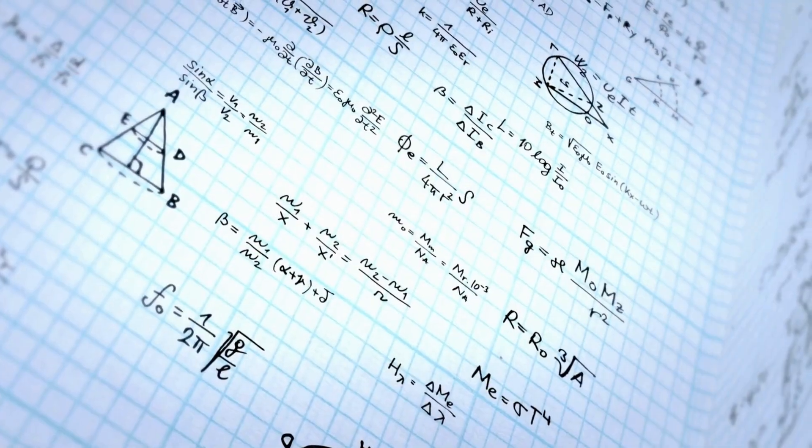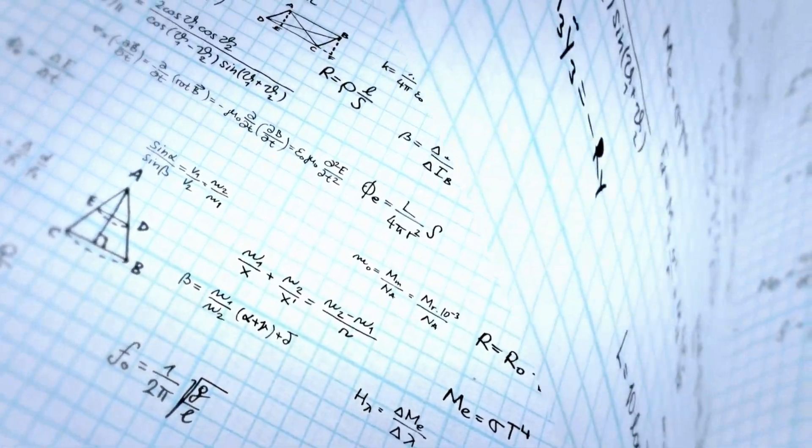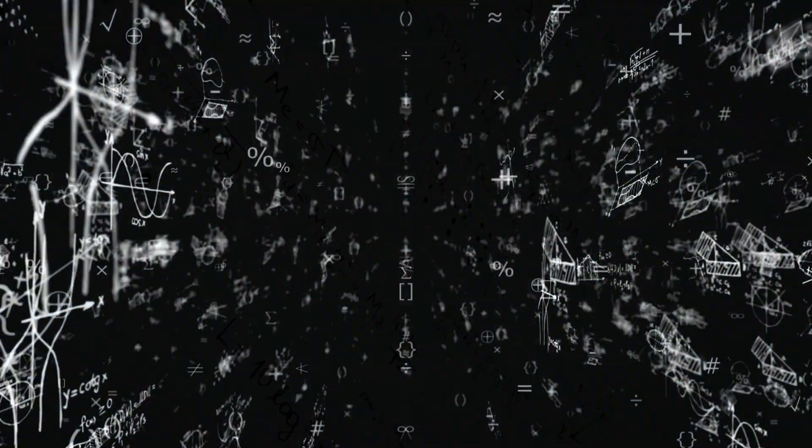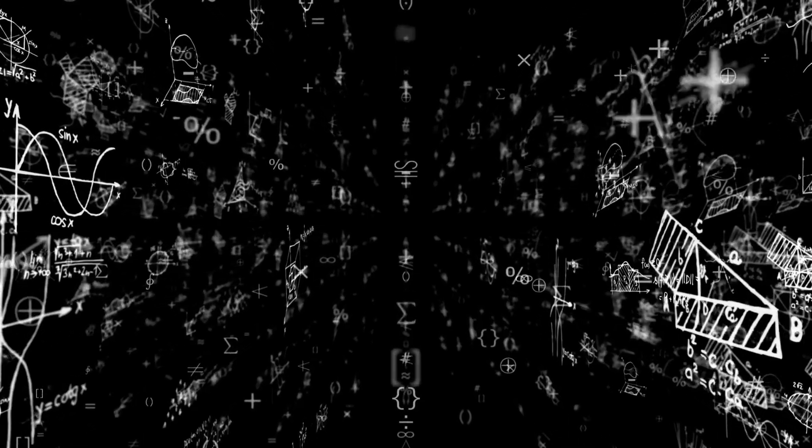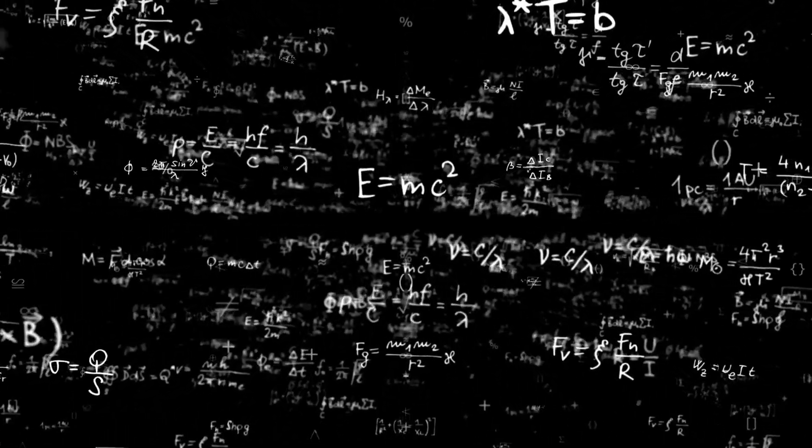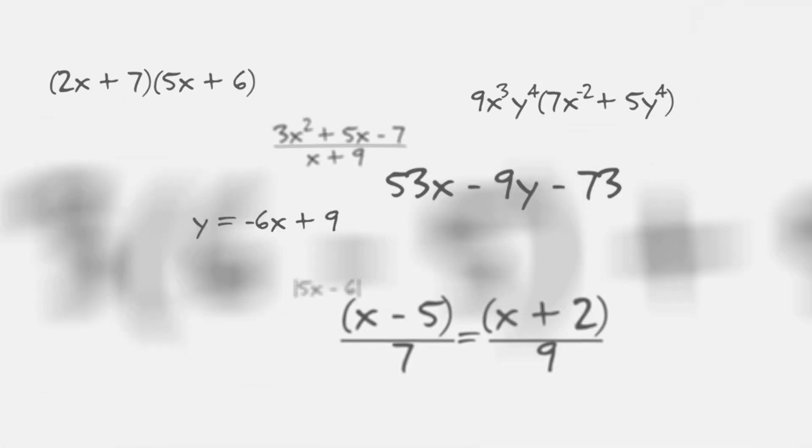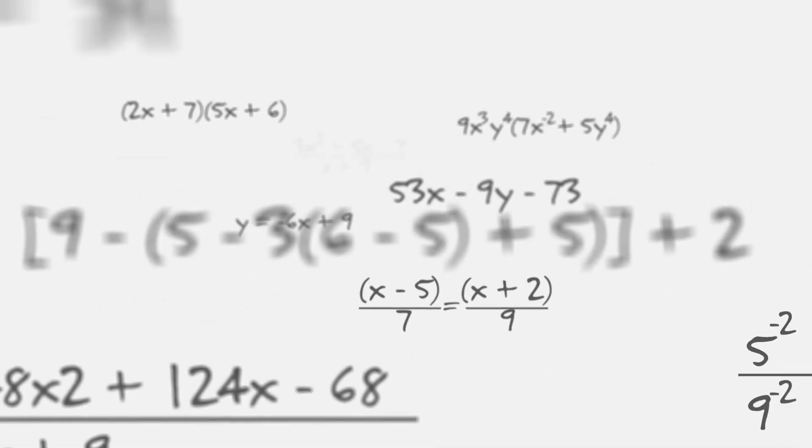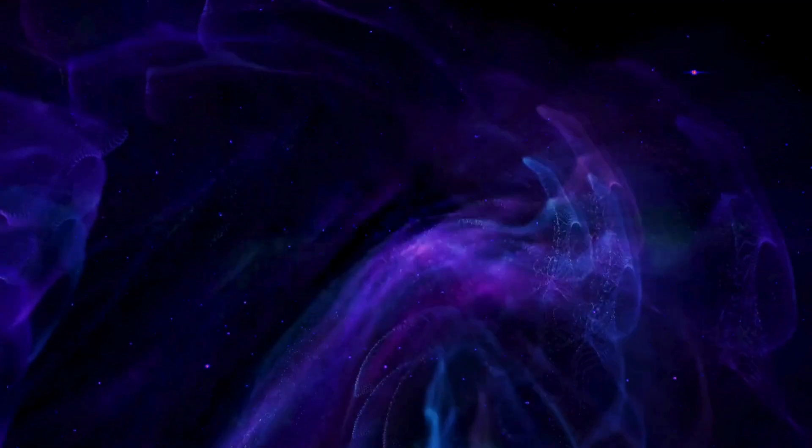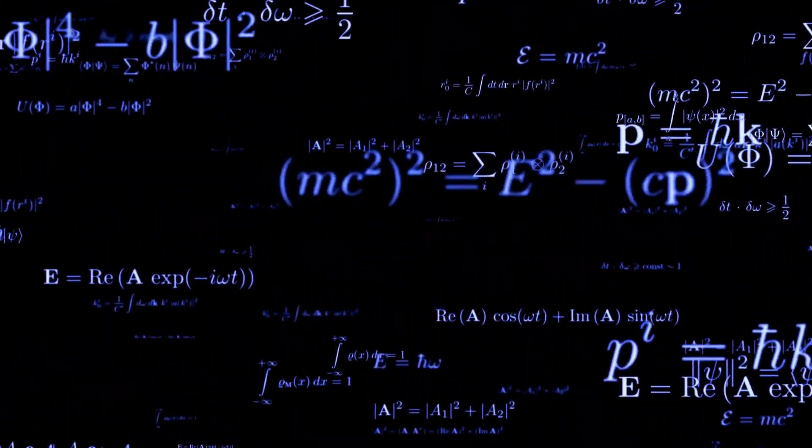So far with string theory, two plus two always is four. Perhaps it is the only theory where two plus two is four. There are a lot of objections for string theory, by the way. The biggest objection is you can't test it, but we're getting closer and closer to being able to test it.